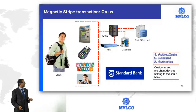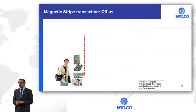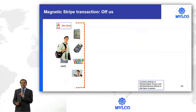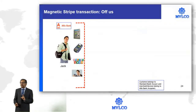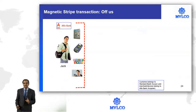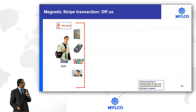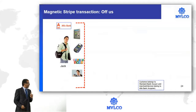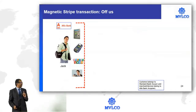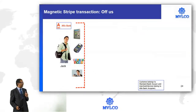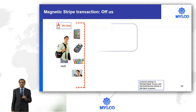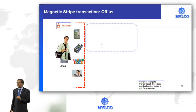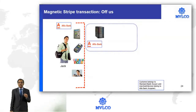The next type is an off-us transaction. Jack is a customer of Standard Bank, but now he is going to use a device of Alpha Bank. He goes to an ATM of Alpha Bank and swipes the card. When the card is acquired by the ATM, it sends the message to the switch of Alpha Bank. At the switch of Alpha Bank, we understand that this card does not belong to us.